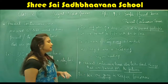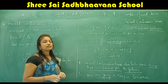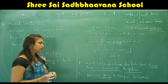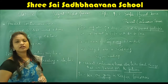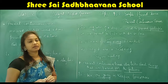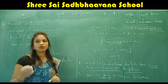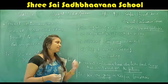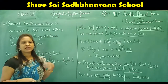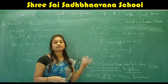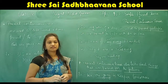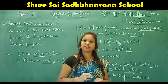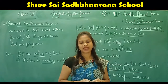Present continuous tense also talks about things that are planned for the future. For example: 'We are going to Kanpur tomorrow' and 'I am going to visit the park tomorrow.' Present continuous tense is also used for actions which are planned to take place in the future. I hope you have understood simple present tense and present continuous tense. In the next class I will come up with a new topic. Thank you, children.